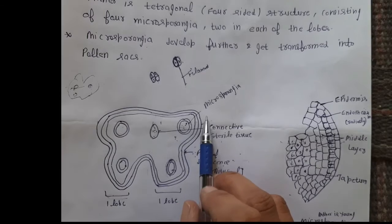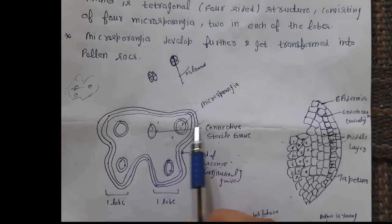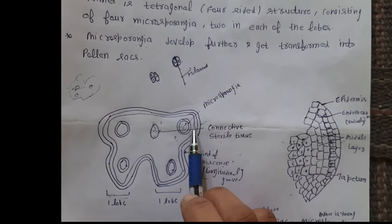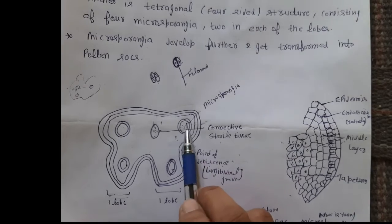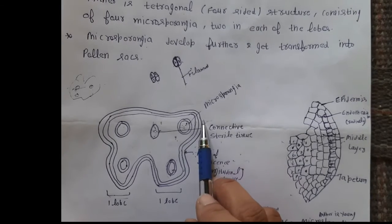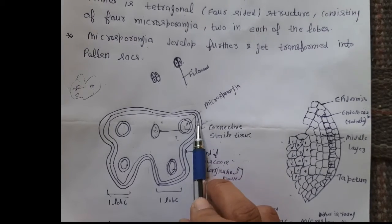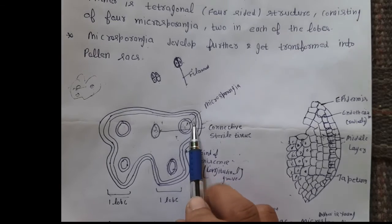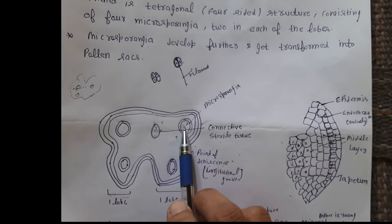We already know the layers of the anther: the innermost layer is the tapetum, then the epidermis, endothecium, the third one is the middle layer, and the innermost is the epidermal layer.